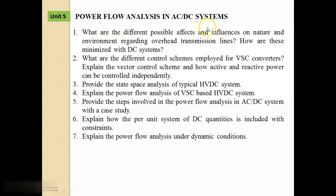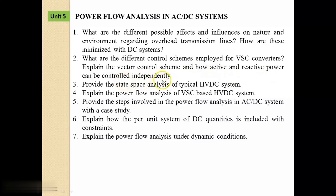Unit 5 is Power Flow Analysis in AC-DC Systems. Seven questions are considered as important. First: What are the different possible effects and influences on nature and environment regarding overhead transmission lines, and how are these minimized with DC systems? Second: What are the different control schemes employed for VSC converters? Explain the vector control scheme and how active and reactive power can be controlled independently.